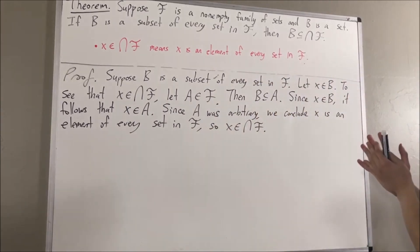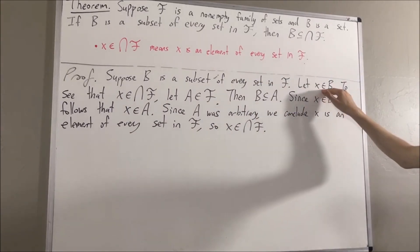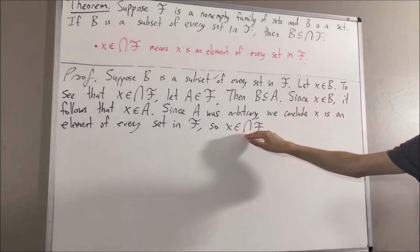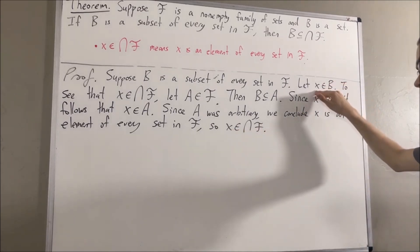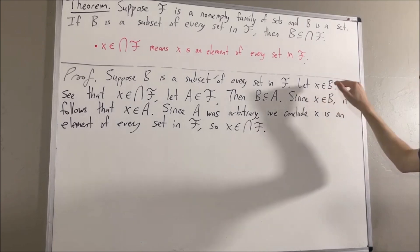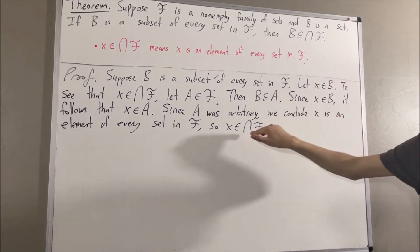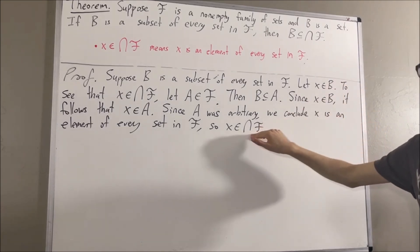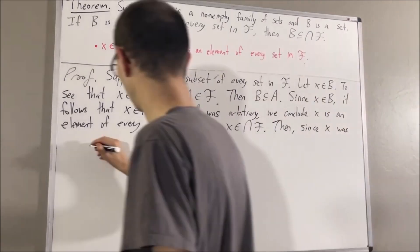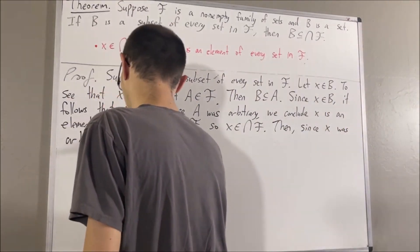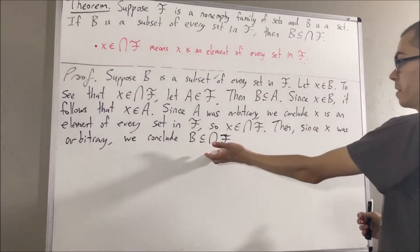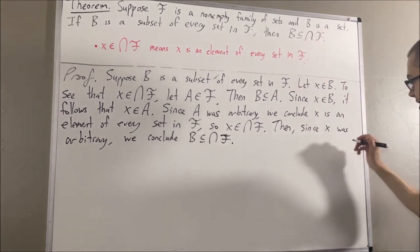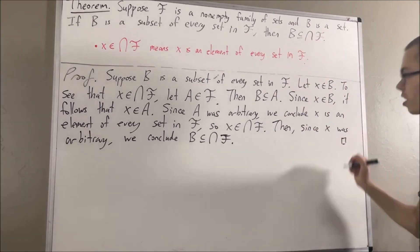Putting this all together, we assumed that x is an element of b, and from there it followed that x is an element of the intersection of f. Since x was arbitrary, this means every element in b also lies in the intersection of f. And that is exactly what we wanted to prove. So this completes the proof.